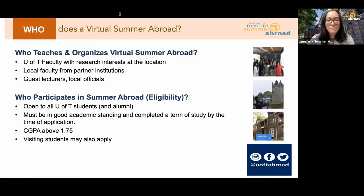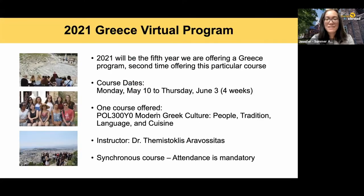One question here: would you happen to know the timing of when the course is running this summer? This particular course will be running between May and June. Here's a quick overview of our Greece virtual program — the course dates run from May 10th to June 3rd, so that will be four weeks in the summer, and we're offering one political science course in this program.